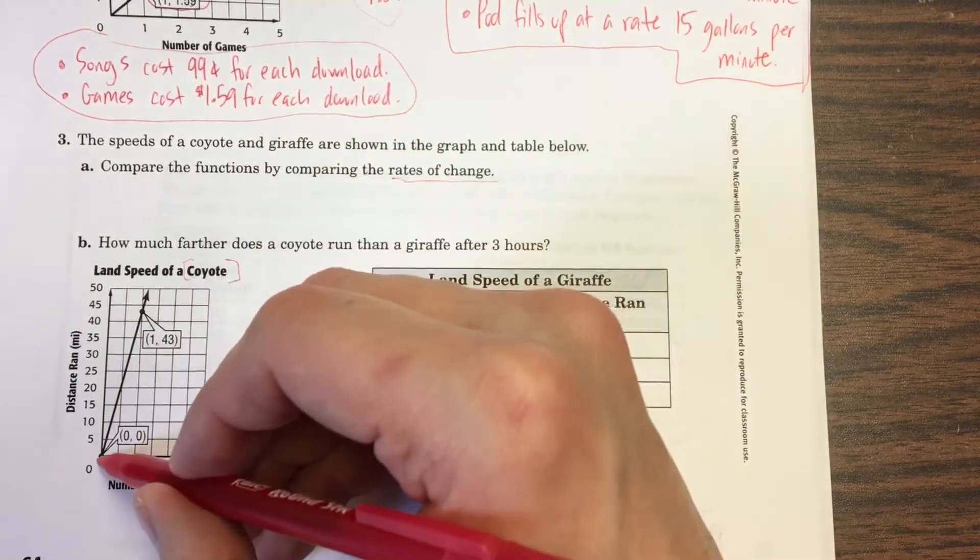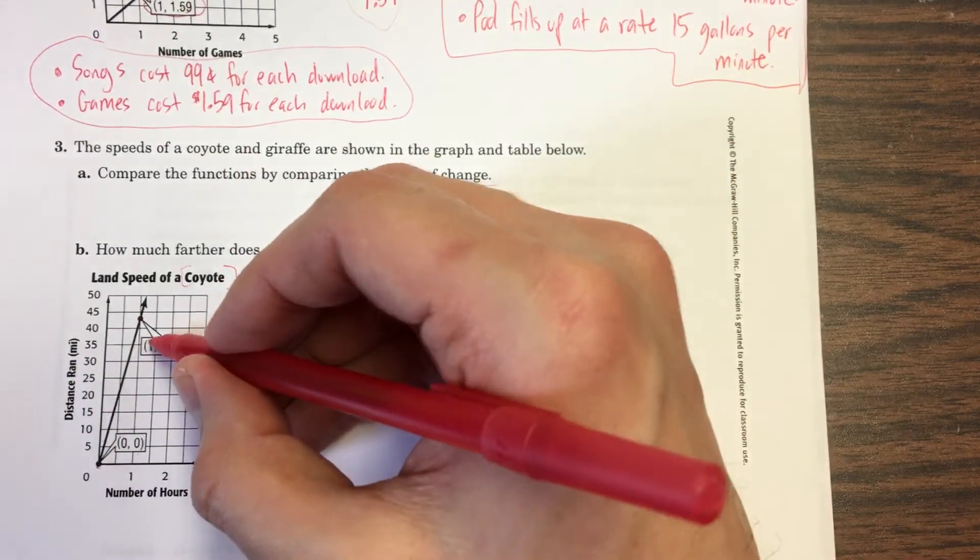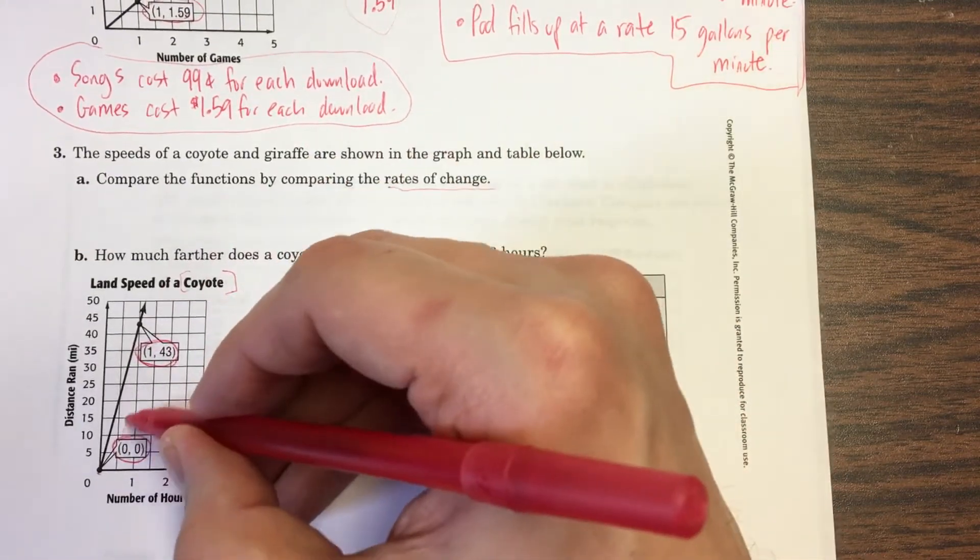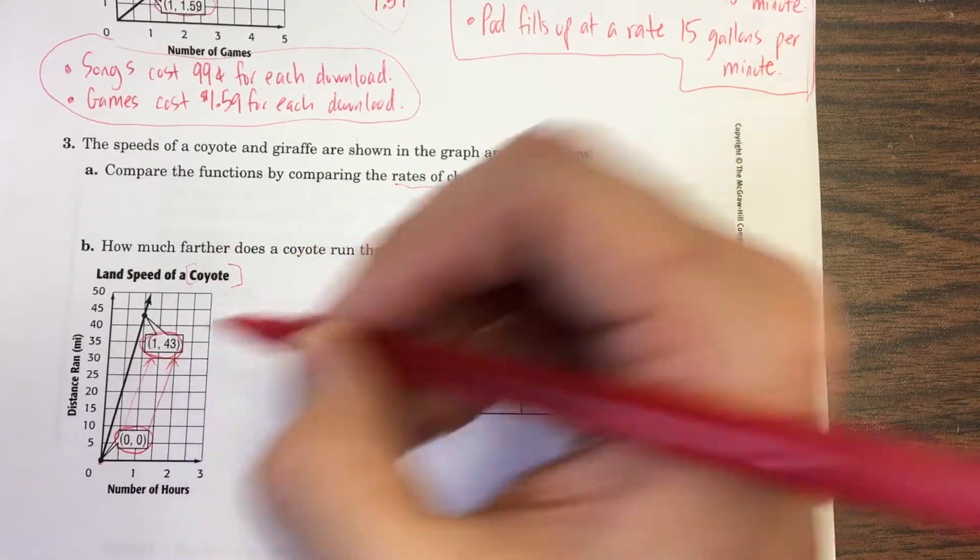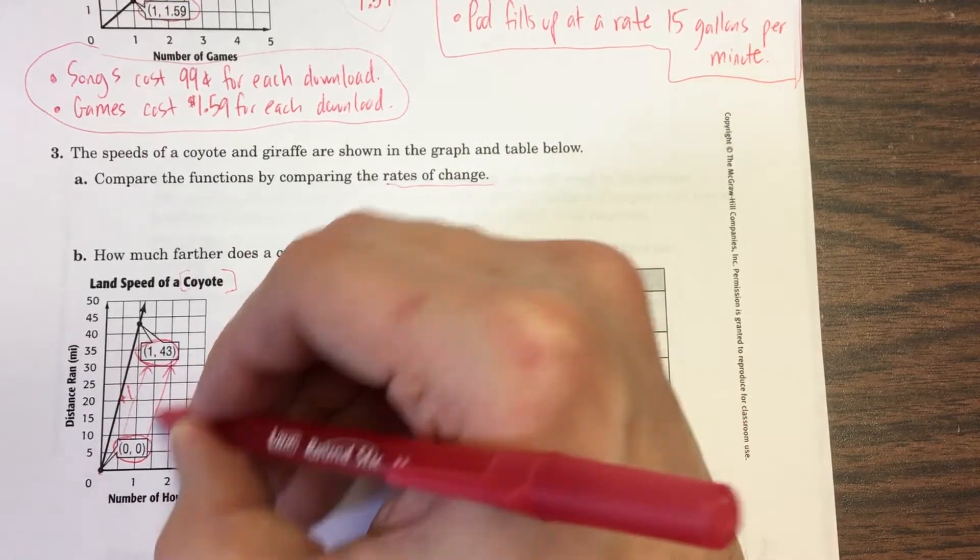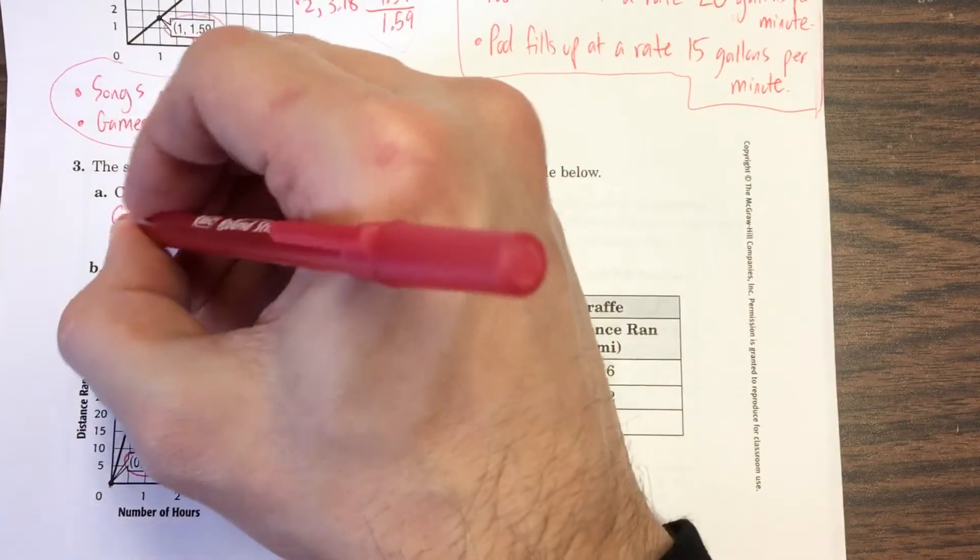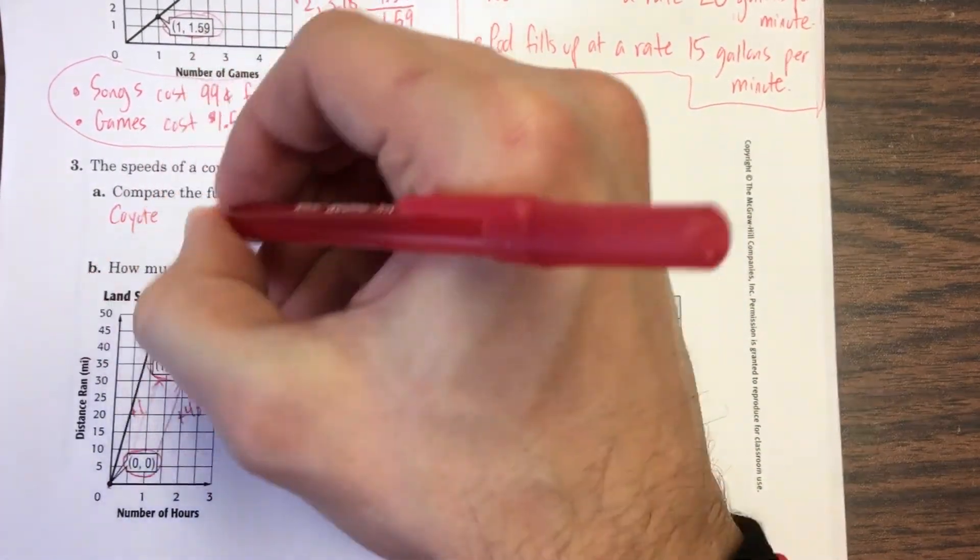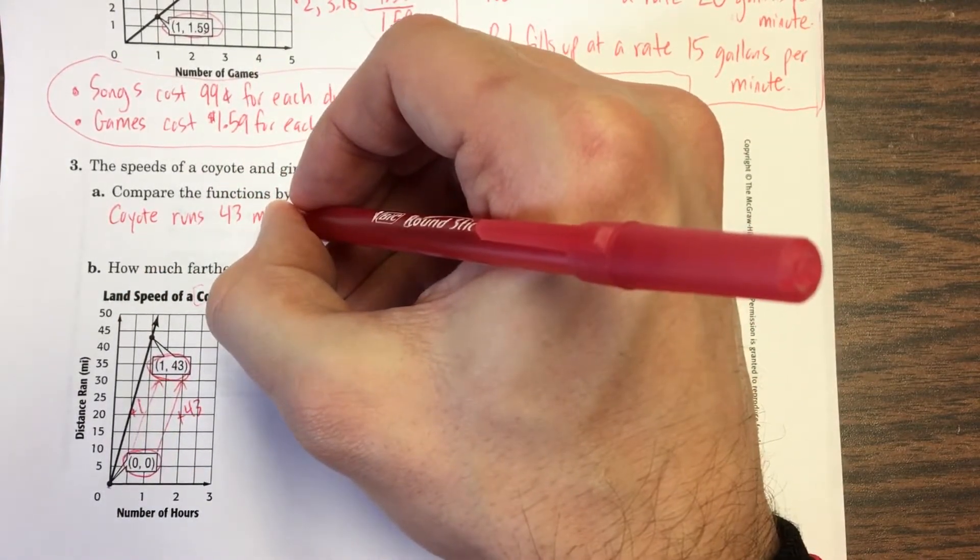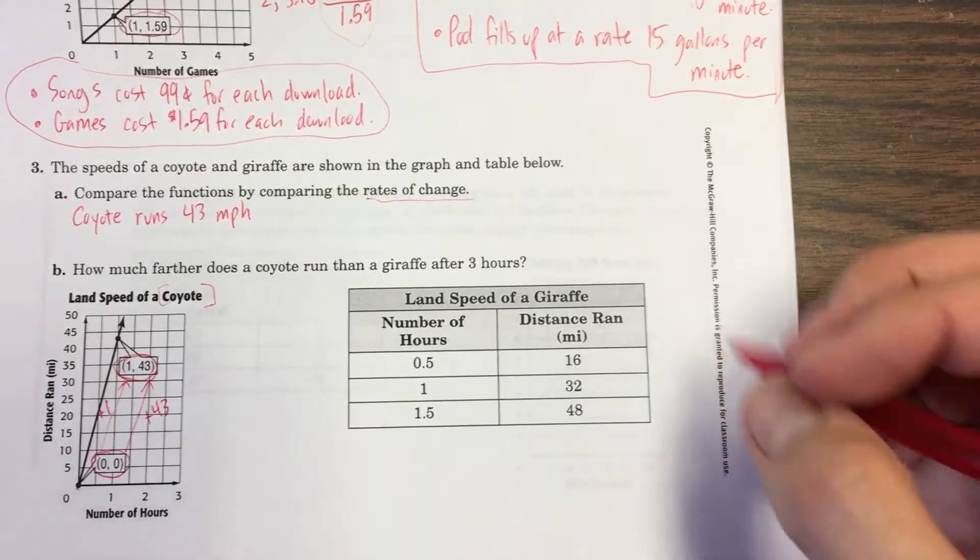The coyote goes, at zero hours, he's gone zero miles. How far he's ran, that makes sense. One hour, he's ran 43 miles. So from here to here, we've added one hour. We've added 43 miles. This is plus one from zero to one. This is from zero to 43, plus 43. So that's pretty straightforward. The coyote can run 43 miles an hour. That is the rate of change. That's his speed. Can a coyote really go 43 miles an hour? That seems fast to me, but I don't know. Maybe it's like on the cartoons, Wile E. Coyote.